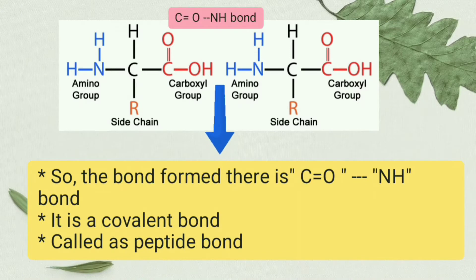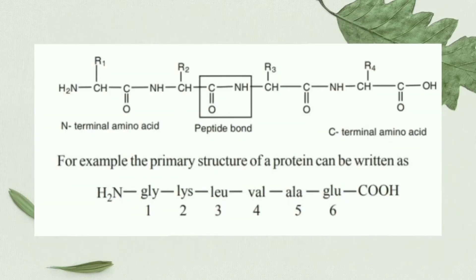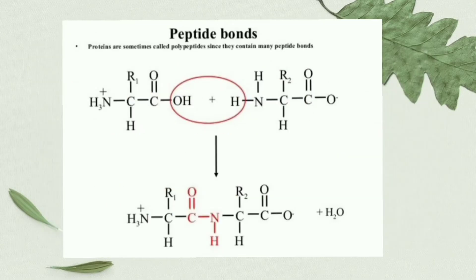As a result of the combination of two amino acids to form a polypeptide chain, water is released. The bond formed is a C-O-N-H bond and this is called the peptide bond, and it is a covalent bond. Please observe the figures clearly for understanding the peptide bond and the formation of the peptide bond.